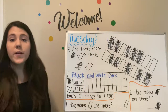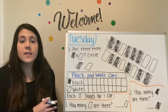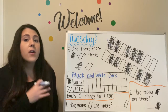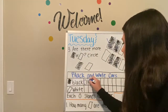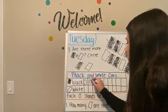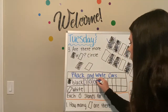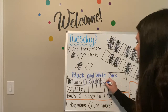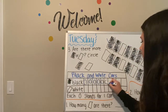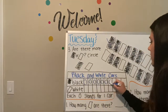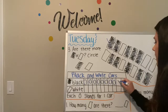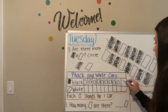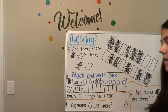Okay, so we're going to draw circles in our picture graph to represent that. One, two, three, four, five, six, seven, eight, nine, ten.